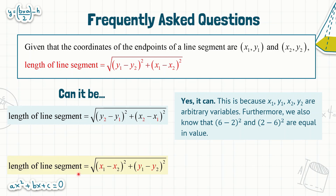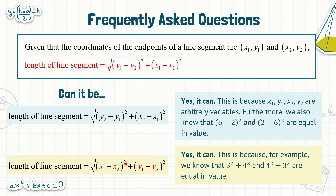Another question is whether you can start with the x-coordinates instead of the y-coordinates. It actually doesn't matter — you can write the formula as √((x1 − x2)² + (y1 − y2)²) and get the same answer. This is because 3² + 4² and 4² + 3² are equal in value; it is just a swap between the two sets of brackets since the operation between them is addition.